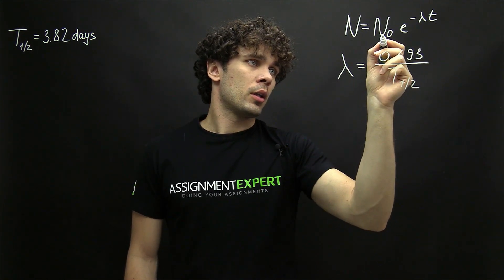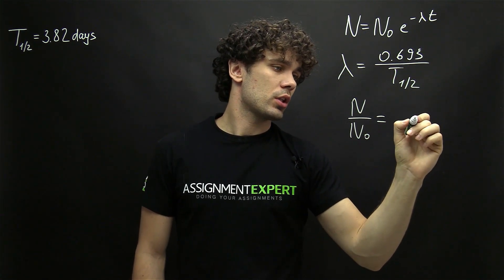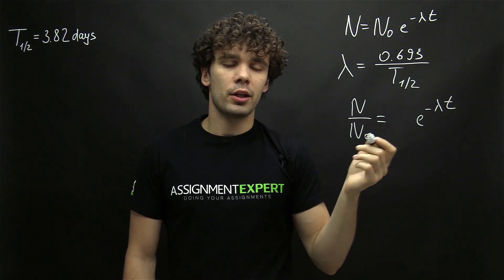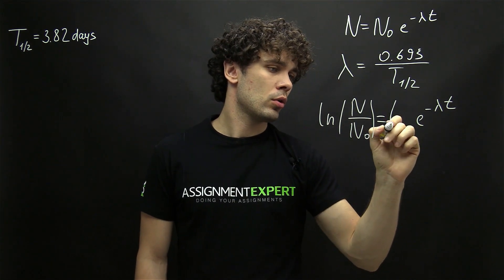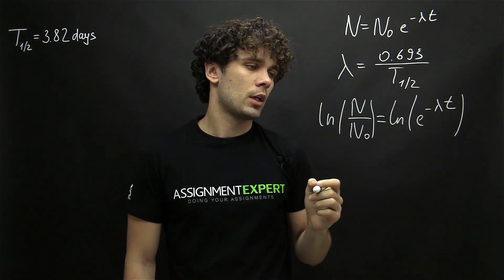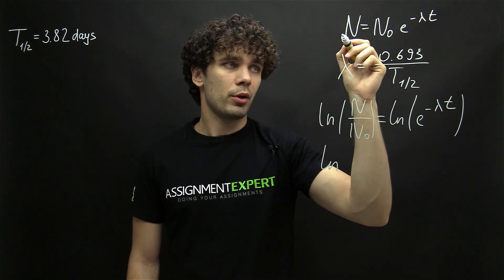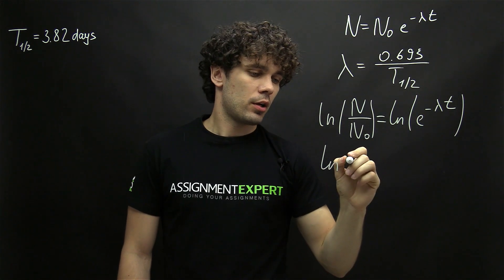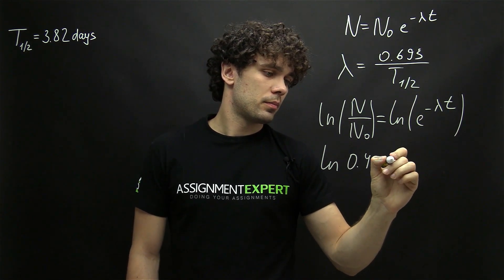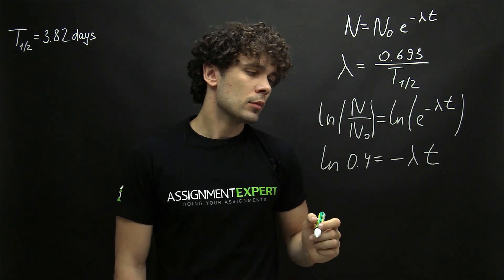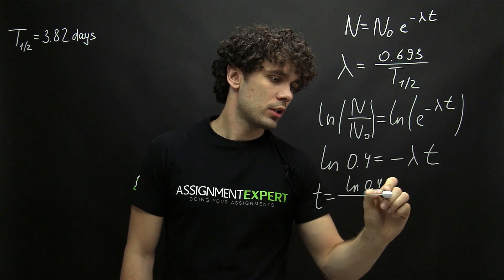Let's rearrange this expression. Moving n₀ to the left, we have n over n₀ equals e to the power of negative lambda t. We can apply the natural logarithm to both sides, giving us ln(n/n₀) equals negative lambda t. Since here we have 40% and 100%, the left side becomes ln(0.4), and on the right side we have negative lambda t.